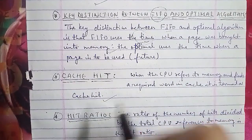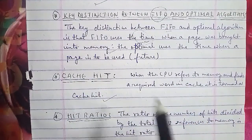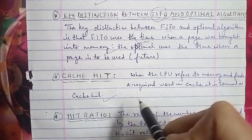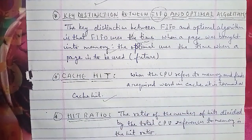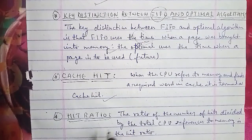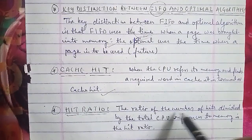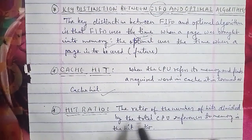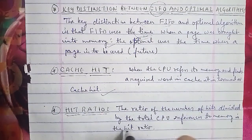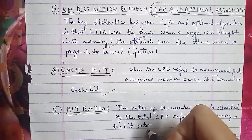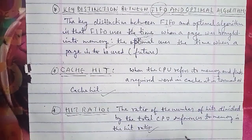Hit ratio: the hit ratio is the ratio of the number of hits divided by the total CPU references to memory. That is the definition of hit ratio.